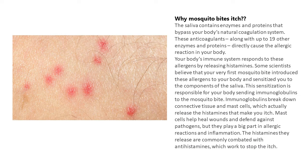Why do mosquito bites itch? The saliva contains enzymes and proteins that bypass your body's natural coagulation system. These anticoagulants, along with up to 19 other enzymes and proteins, directly cause the allergic reaction in your body. Your body's immune system responds to these allergens by releasing histamines. Scientists believe your very first mosquito bite sensitized you to the components of the saliva, sending immunoglobulins to the bite. Immunoglobulins break down connective tissue and mast cells, which release histamines that make you itch. Antihistamines are commonly used to combat this reaction.